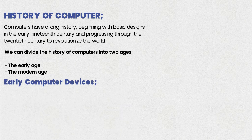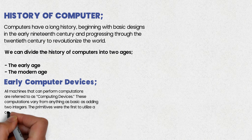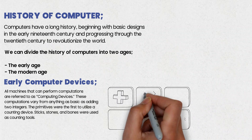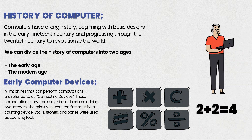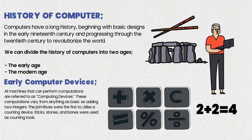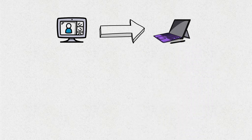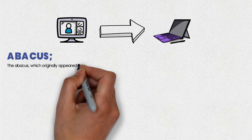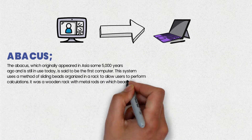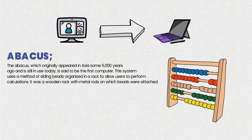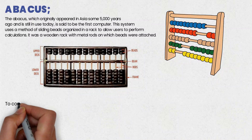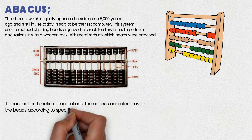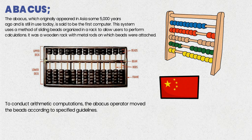Early computer devices: all machines that can perform computations or calculations are referred to as computing devices. The primitives were the first to utilize a counting device — sticks, stones, and bones were used as counting tools. The Abacus, which originally appeared in Asia some 5000 years ago and is still in use today, is said to be the first computer. It used sliding beads organized on a wooden rake with metal rods to allow users to perform calculations. The Abacus operator moved the beads according to specified guidelines to conduct arithmetic computations. Some countries such as China, Russia, and Japan still use an Abacus.